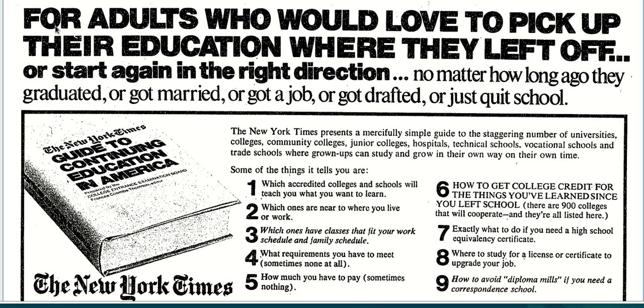Another masterful layout component is the numbered bullets. They're not very long — they're really small and easy to read, and they all have promises. Number one tells you which accredited colleges and schools will teach you what you want to learn — that's a big promise. The second bullet says which schools are near to where you live or work — very relevant information.